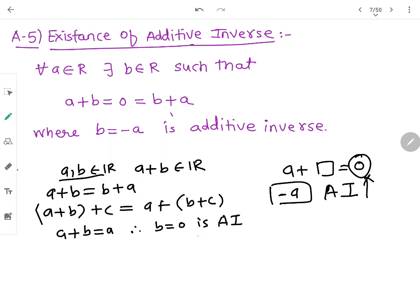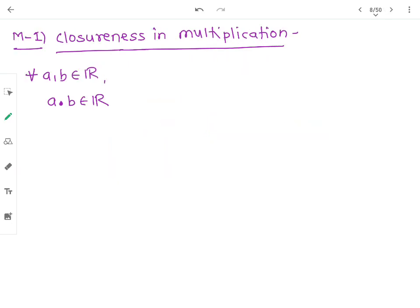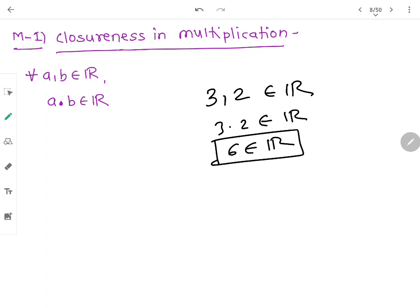This was addition. Now multiplication. M1 is the first property: closureness. If there are two numbers, then their multiplication is also a real number. For example, 3, 2 belongs to R, then 3 into 2 also belongs to R, which is 6. And 6 is a real number.